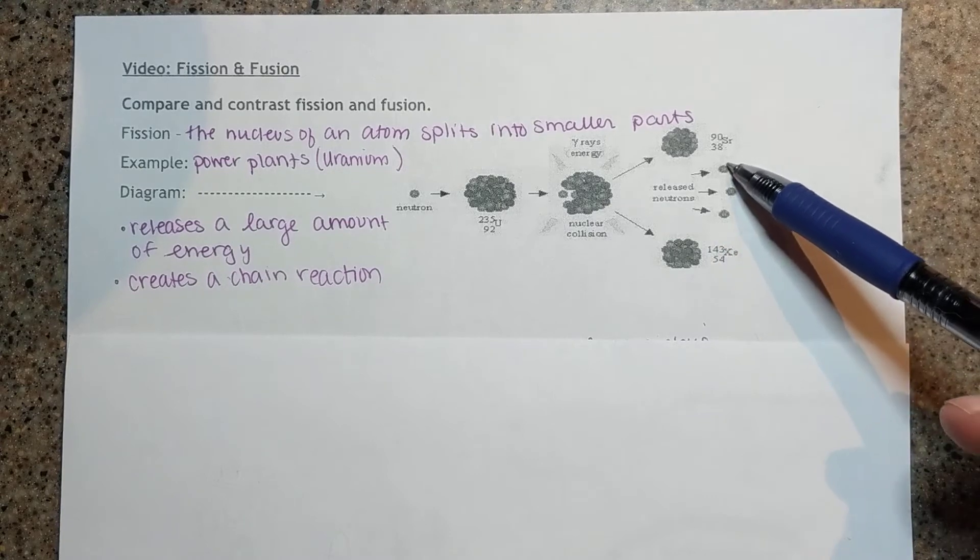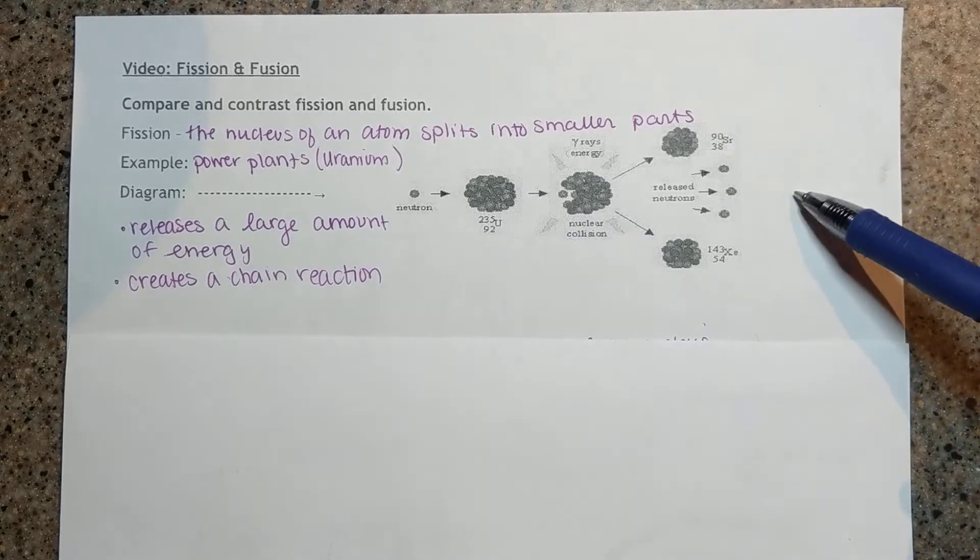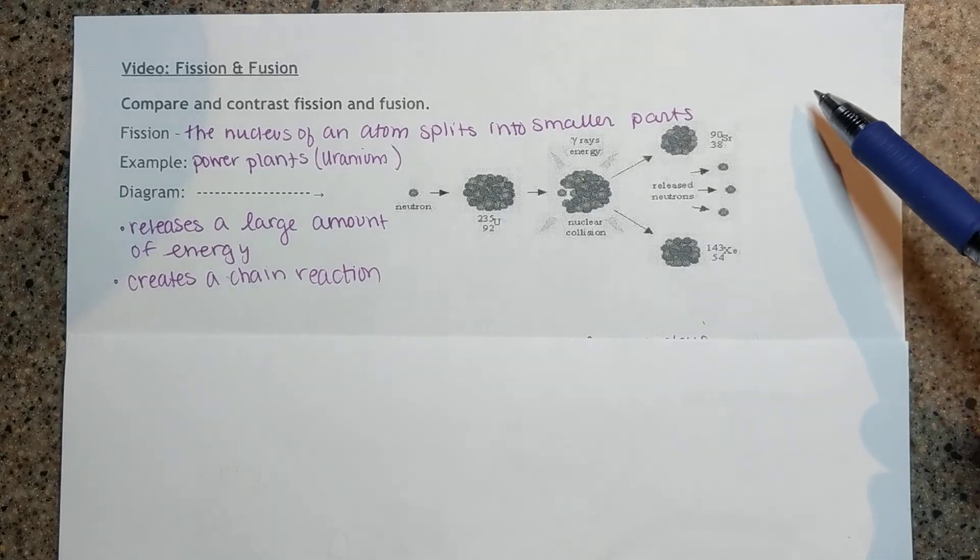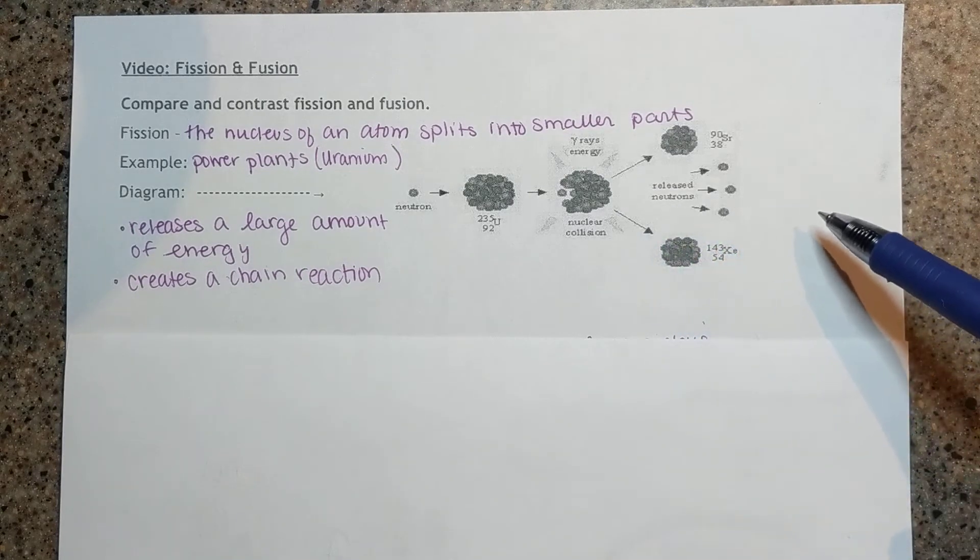These neutrons that are released go on to hit three more uranium-235s and they each release three neutrons. And so we end up with a chain reaction.